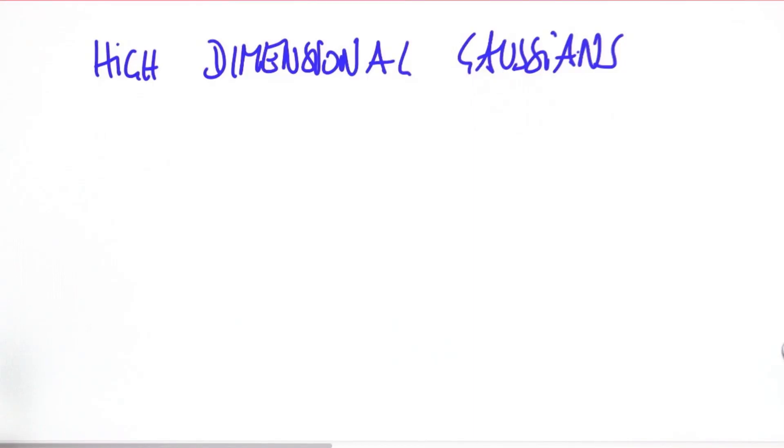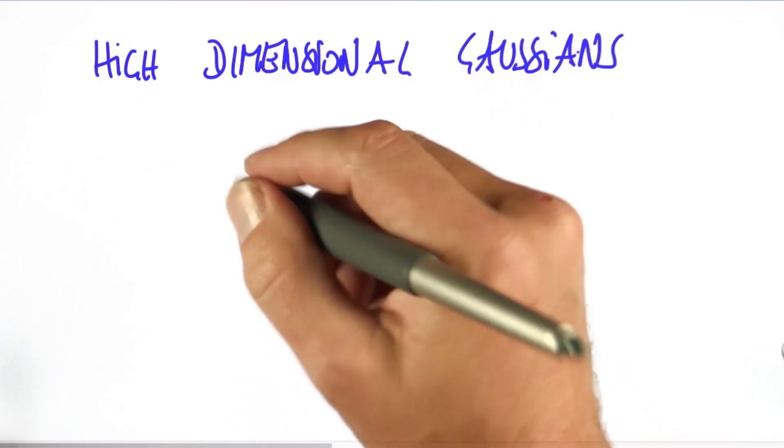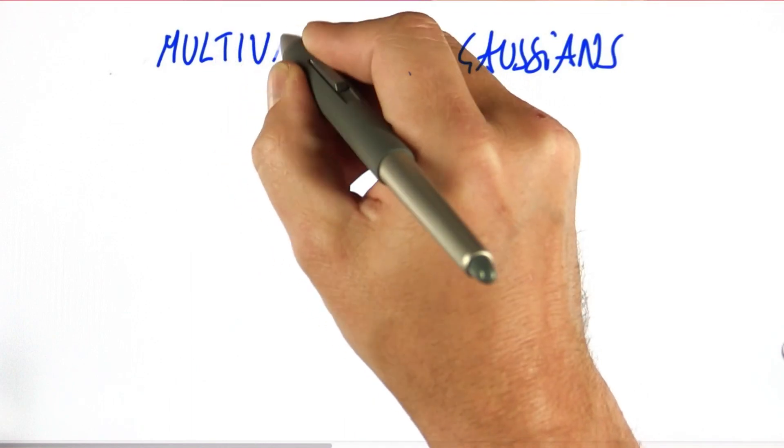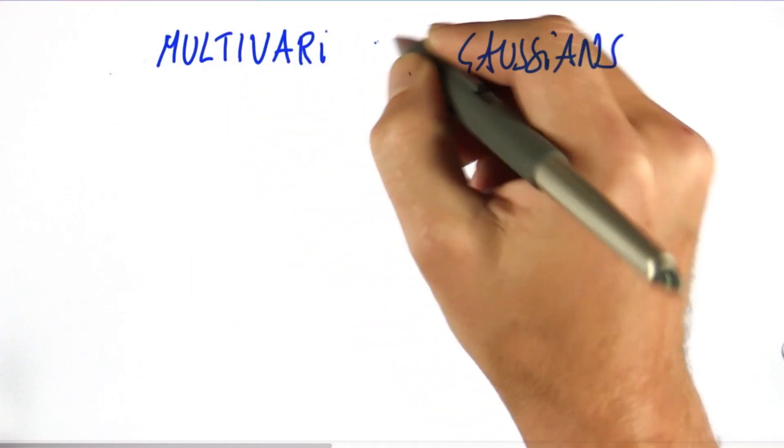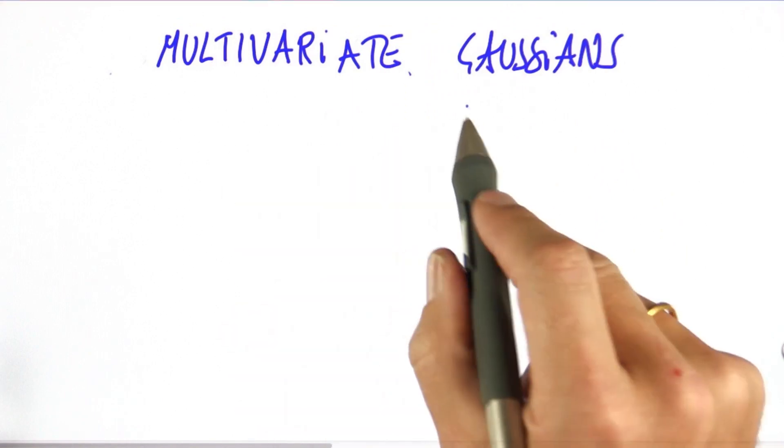To explain how this works, I have to talk about high-dimensional Gaussians. These are often called multivariate Gaussians.